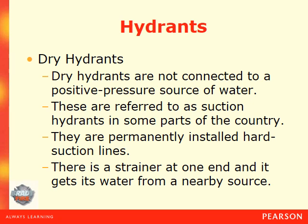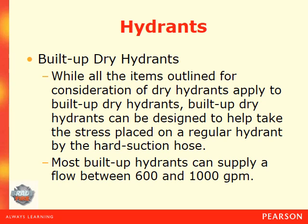Dry hydrants are not connected to a positive pressure water source — they are referred to as suction hydrants. In some parts of the country they are permanently installed hard suction lines with a strainer at one end, drawing water from a nearby source such as a pond, stream, creek, or river. Most built-up dry hydrants can supply a flow between 600 and 1,000 gallons per minute.